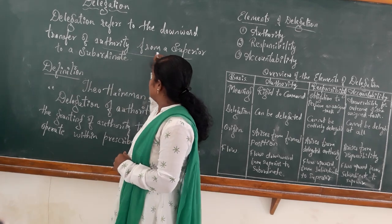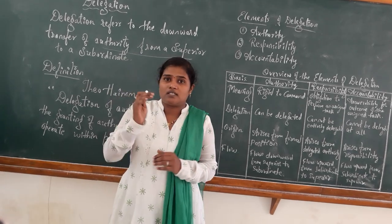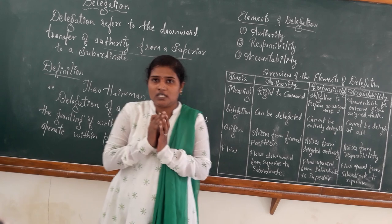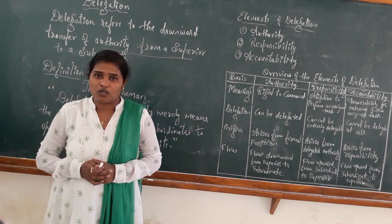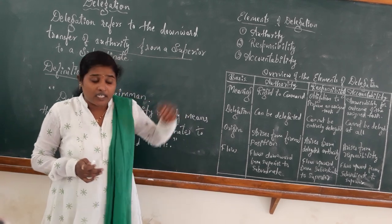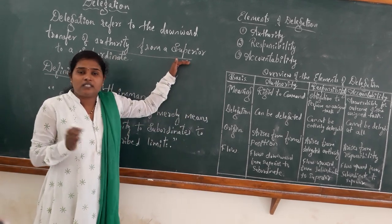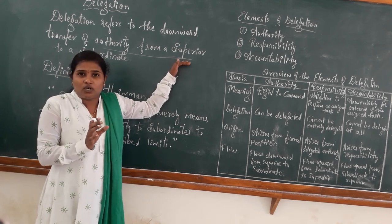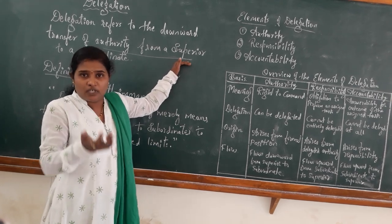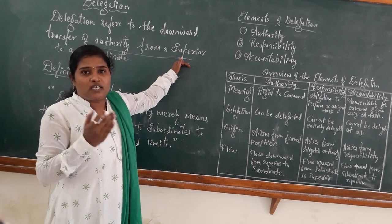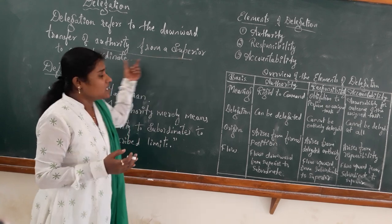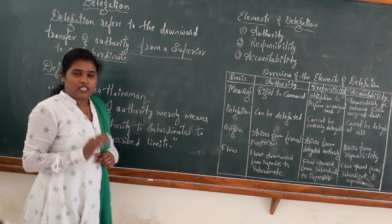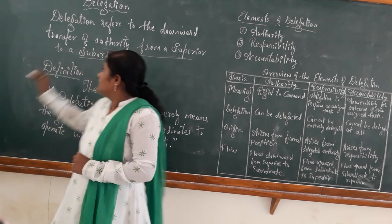Superiors are those who are called the head of the department, or who hold the main authority in the organization. That person cannot manage all things in the organization, so some of the authority is to be transferred to the employees. Employees are nothing but the subordinates. That transformation of authority is called delegation.